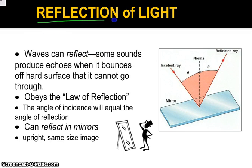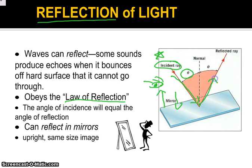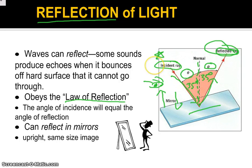Let's start with reflection. This is something you see all the time — you look into a mirror and the light bounces off the mirror and eventually returns to the person's eye. Some sounds can reflect, which produces our echoes, and they obey what's called the law of reflection. Whatever angle the light comes in at — the incident ray — it will reflect at that same angle, the reflected angle. So if it came in at 35 degrees to the normal — the line perfectly perpendicular to the surface — it's going to exit at 35 degrees.